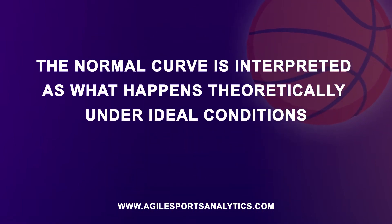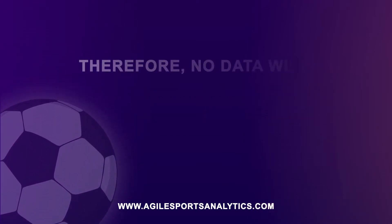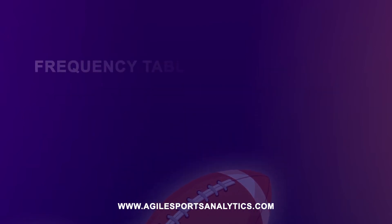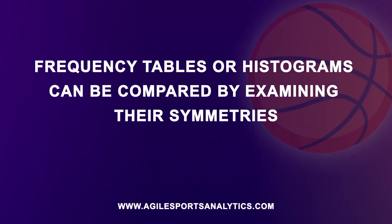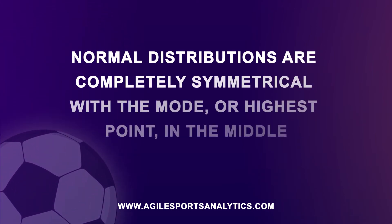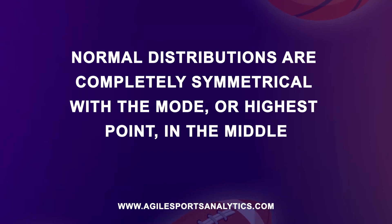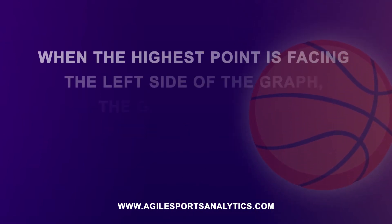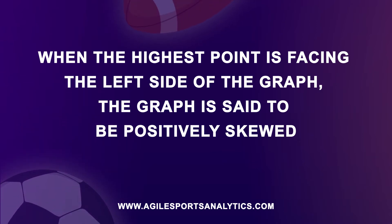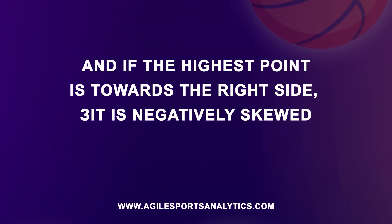The normal curve is interpreted as what happens theoretically under ideal conditions; therefore, no data will ever form an exact bell curve. Frequency tables, or histograms, can be compared by examining their symmetries. Normal distributions are completely symmetrical with the mode, or highest point, in the middle. When the highest point is facing the left side of the graph, the graph is said to be positively skewed, and if the highest point is towards the right side, it is negatively skewed.